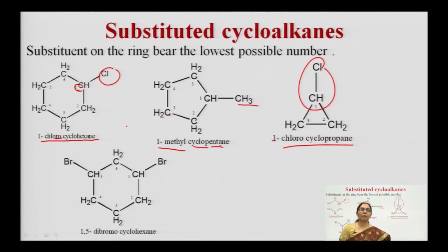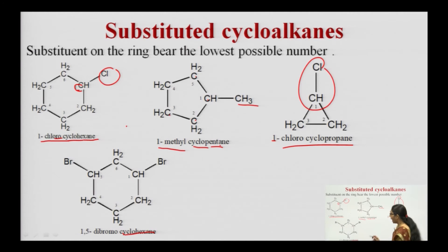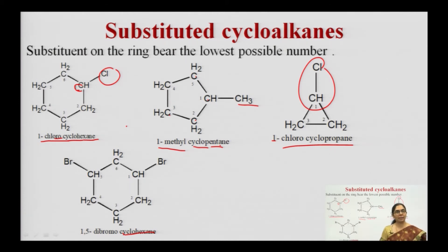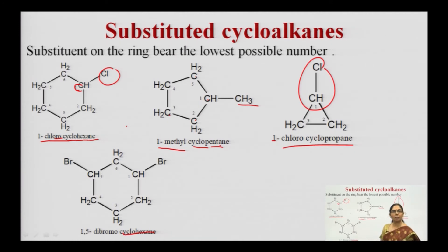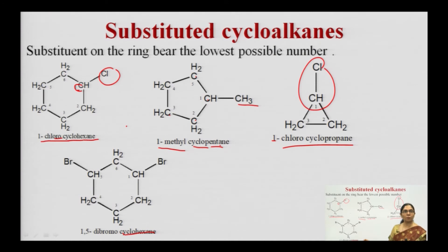What if there is more than one substitution? For example, a 6-carbon cyclic ring — cyclohexane — with two bromine atoms: since both substituents are the same (both bromine), either can be named carbon 1. Numbering clockwise: 1, 2, 3, 4, 5, 6 — if one bromine is at carbon 1 and the other at carbon 5, the name comes out to be 1,5-dibromocyclohexane.